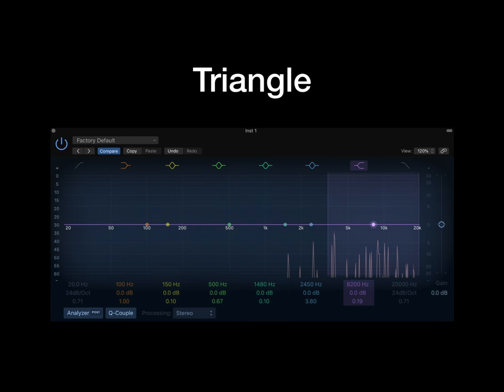Triangles are very high in frequencies and are very easy to be too bright and loud because they'll be mic'd quite closely in a sample library recording, so be sure to cut these for the real effect. As you can see in this Cine Samples Triangle sample library, the frequencies are 3.5kHz onwards, so mess around with it and see what suits your track best because it will vary.